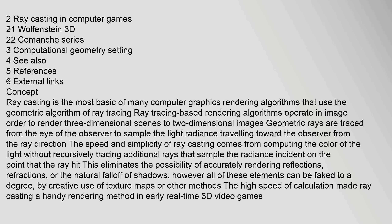Ray casting is the most basic of many computer graphics rendering algorithms that use the geometric algorithm of ray tracing. Ray tracing based rendering algorithms operate in image order to render three-dimensional scenes to two-dimensional images. Geometric rays are traced from the eye of the observer to sample the light radiance traveling toward the observer from the ray direction. The speed and simplicity of ray casting comes from computing the color of the light without recursively tracing additional rays that sample the radiance incident on the point that the ray hit.